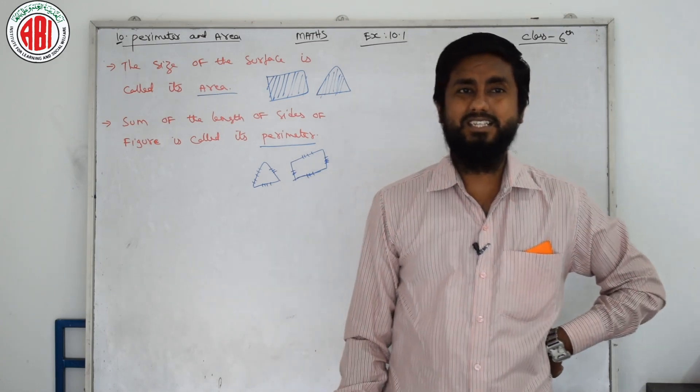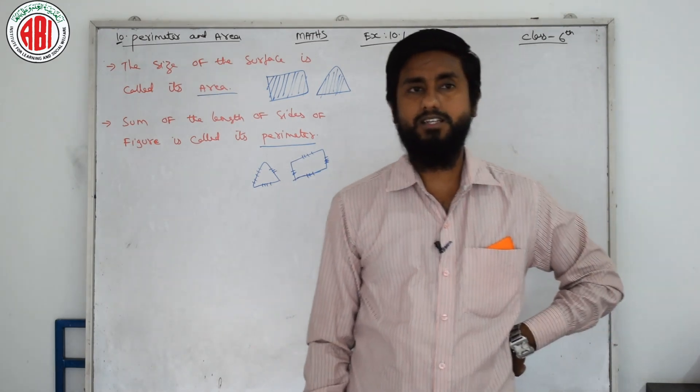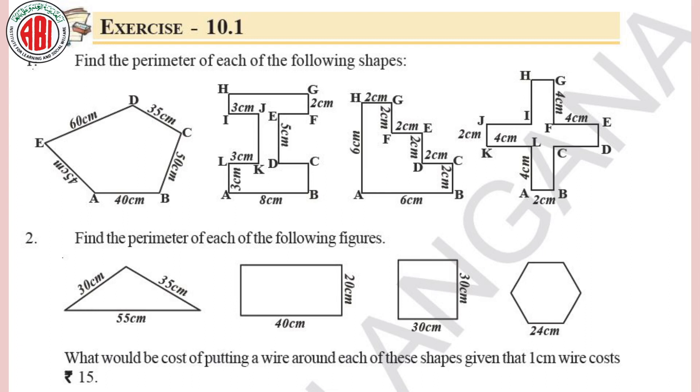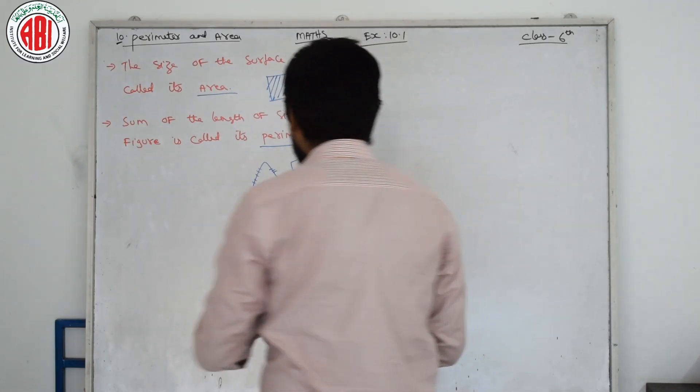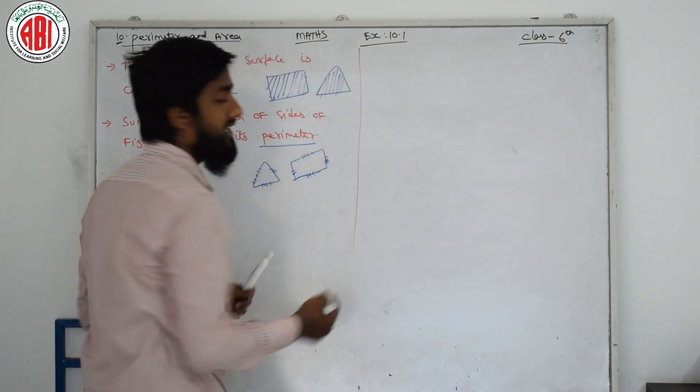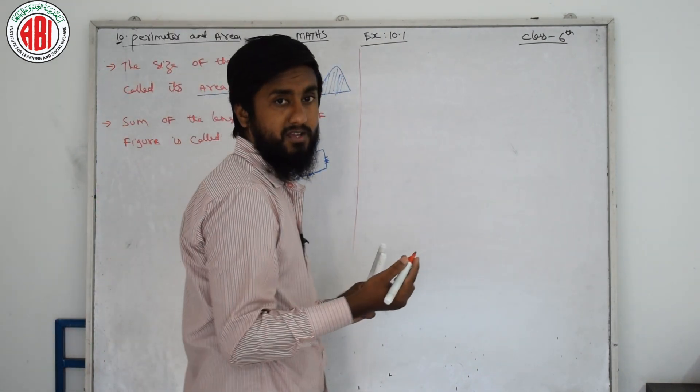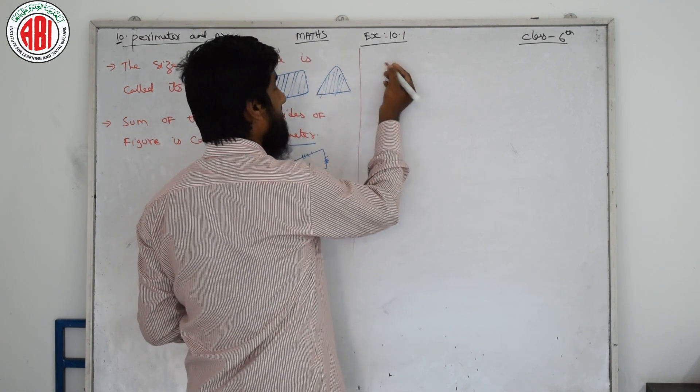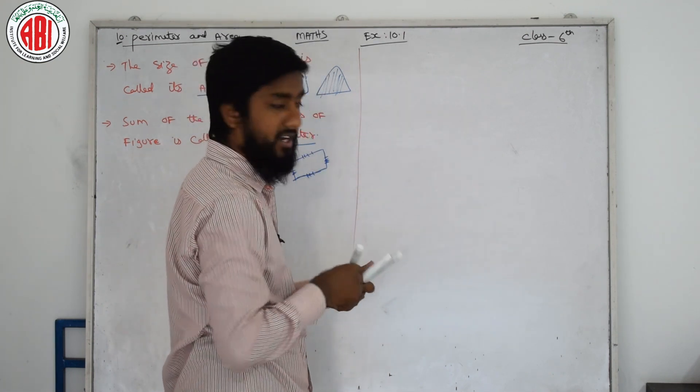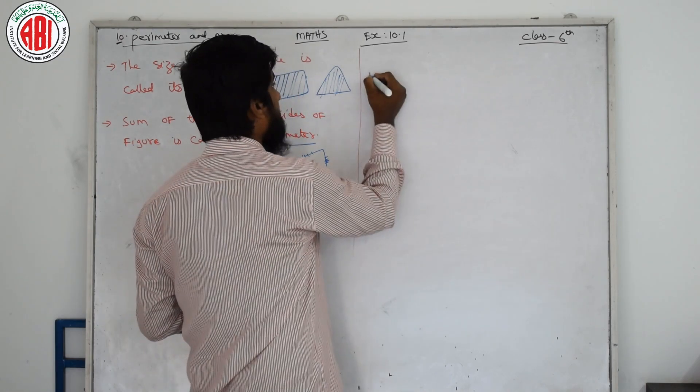Now, question number 1, exercise number 10.1. Look at the diagram. Here, this diagram is different types of figures. In the first diagram, we have to find the perimeter. How much do we have to write?